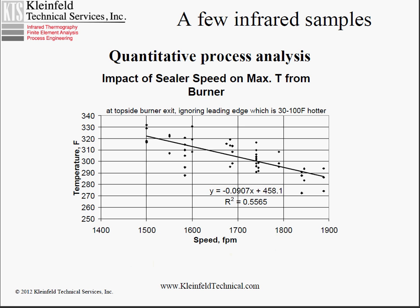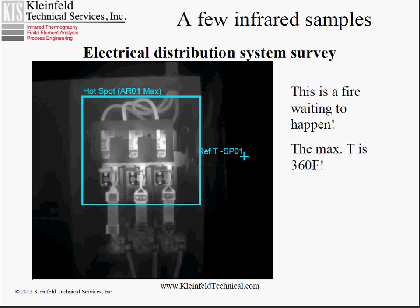This type of analysis can be performed for a wide variety of applications. A very common application for infrared is electrical distribution system surveys, where we're looking for hot spots that can be caused by an overloaded component, a failing component, a poor connection, a dirty connection, a weak connection, or a corroded connection. In this instance, we're looking at a 60 amp fused disconnect in a coffee manufacturing facility. The highest temperatures in the box there are 360 Fahrenheit. This is a fire waiting to happen. This unit was not overloaded, but it was in trouble.